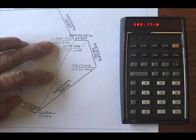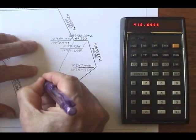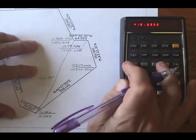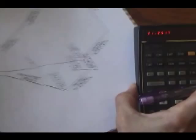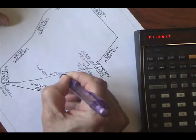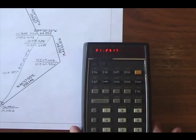And now I've got the distance. It's 418.6955. And the bearing is going to be northeast or southwest, 21. I need to convert it to degrees minutes seconds. And it's going to be north 21 degrees 25 minutes 17 seconds east between those two. So that's basically how you do survey computations with the HP-45.